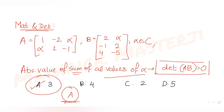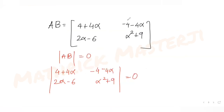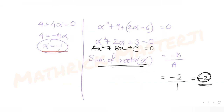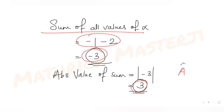I hope you've understood how to solve this type of question using properties of determinants. First, I found the product of the two matrices A·B, then found the determinant of that matrix and equated it to zero. That gave the values of α — one root was -1, and from the next equation the sum of roots was -2 — so the total sum was -3 and the absolute value was 3, matching option A.